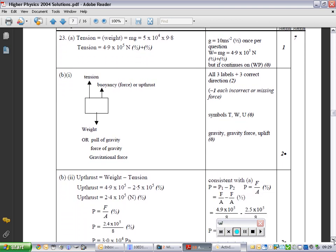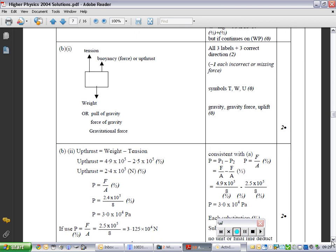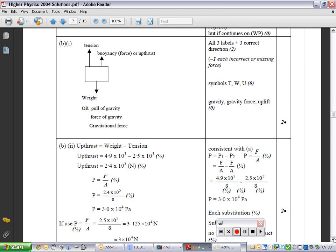Keep going further down, what forces are acting on it. So, tension up, buoyancy force, or upthrust up, weight is down. You could have pull of gravity down. Force of gravity, I do not want you to write that because I don't think it is force of gravity, but SQA disagree with me. Gravity is not a force. I love gravitational force because it's a force caused by gravity, but gravity itself is not a force. So, that's two marks for that. You'll get, all three labels gives you two marks, and you take one off for each incorrect or missing label.